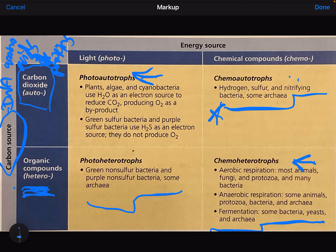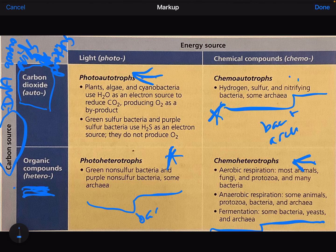Whereas chemoautotrophs and photoheterotrophs only have bacteria and archaea.